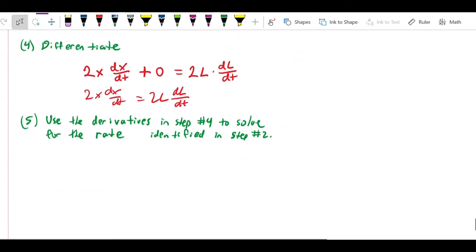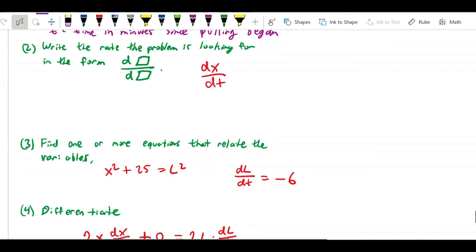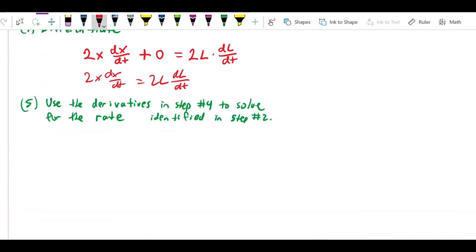And now we're just going to solve for the rate that we want. We see that dx/dt is the rate that we want. So, 2x dx/dt equals 2L dL/dt. I'm just going to divide both sides by 2x and get dx/dt is equal to 2L over 2x dL/dt. And since these 2's cancel, I'll just erase them. And this is what we're looking for.